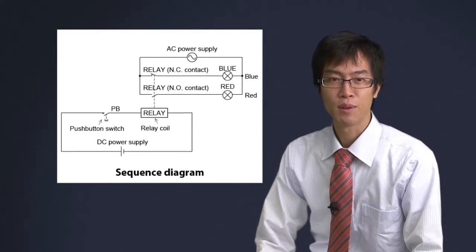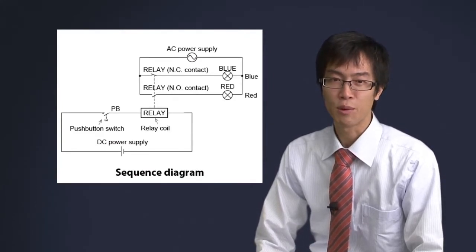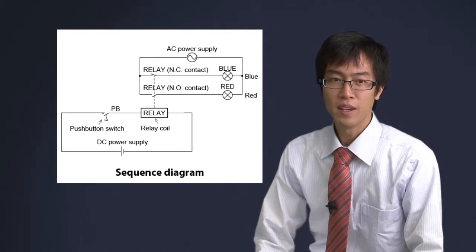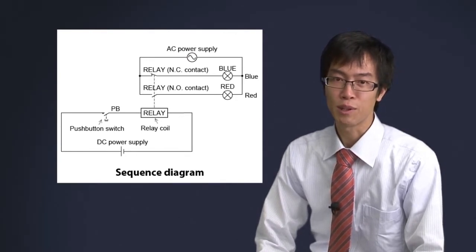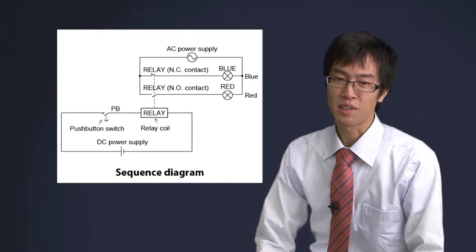And so, we use sequence diagrams to more easily understand the order of operation. In sequence diagrams, contacts and relays are arranged in order of operation and connected by straight lines. This drawing is standardized and can be understood by any third party.